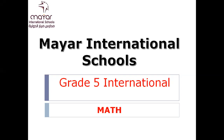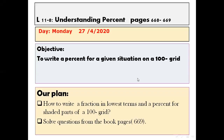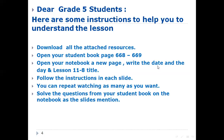Hi, my dear students, how are you? Ramadan Kareem, and I hope you're having good times in Ramadan. Today we're going to have a new lesson from Chapter 11. Our lesson is about ratio, proportion, and percentages — Chapter 11, Lesson 8, about understanding percent. The lesson is on pages 668 to 669. The main objective is to know how to write a percent of a given situation on a 100 grid.